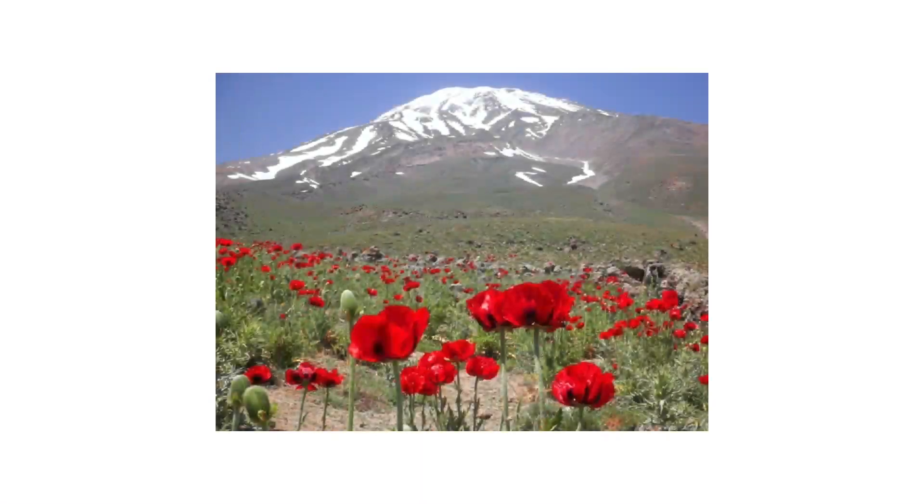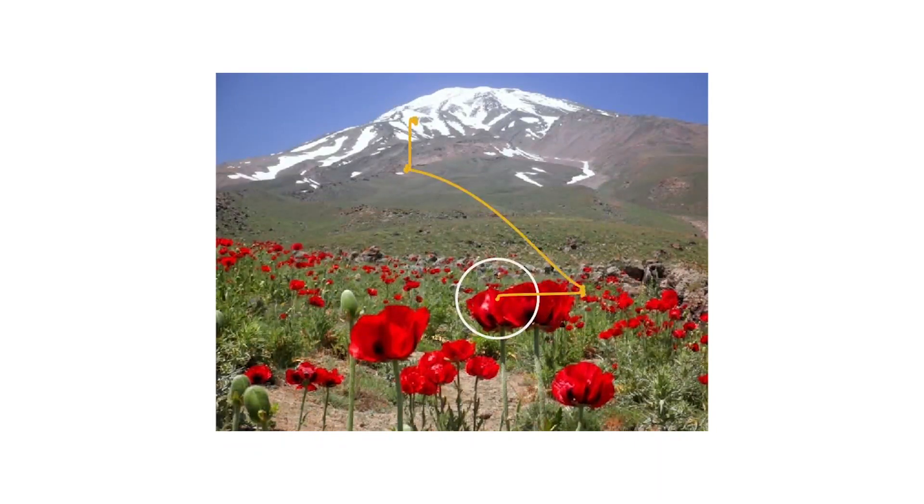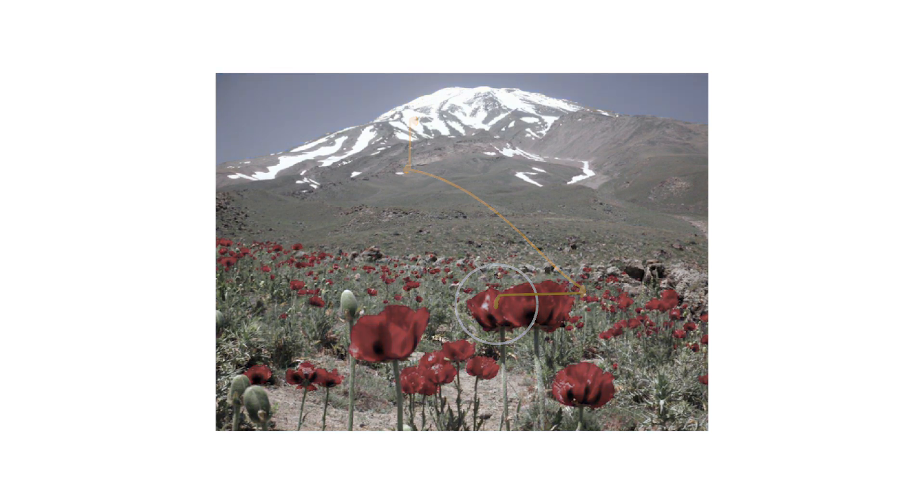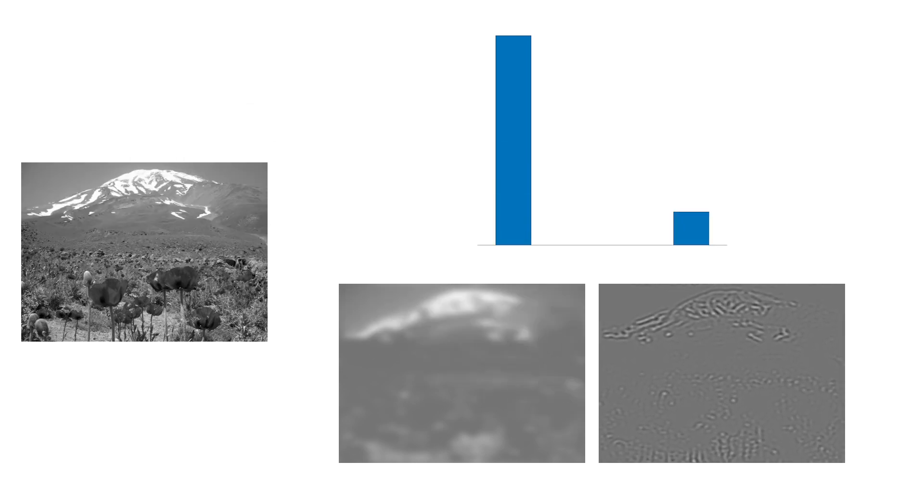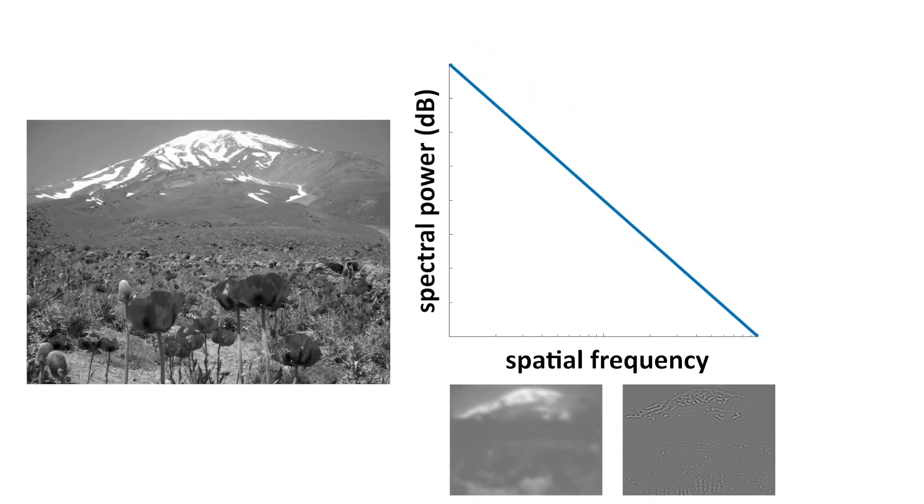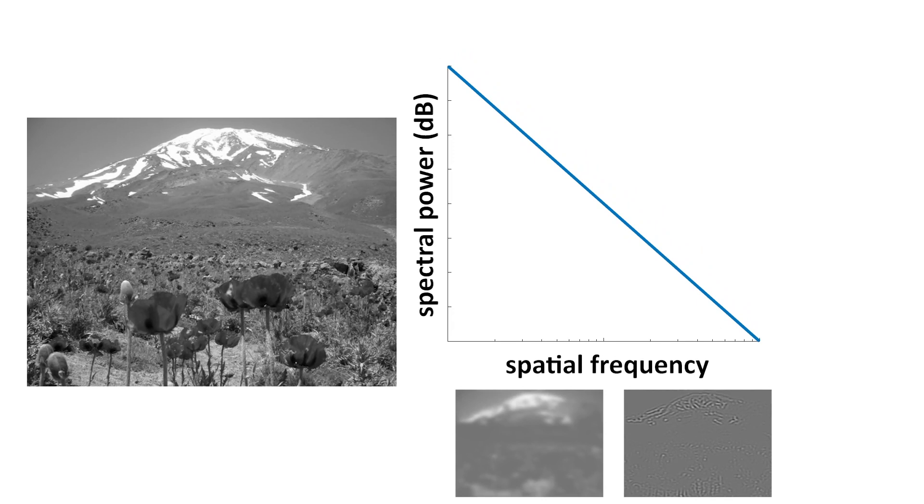In the first part of the study, we examined how saccades restructure external spatial information into a spatiotemporal flow on the retina. Natural scenes are composed primarily of coarse structures, and less so of fine details. Statistically, the power at different spatial frequencies follows the pattern 1 over k squared.